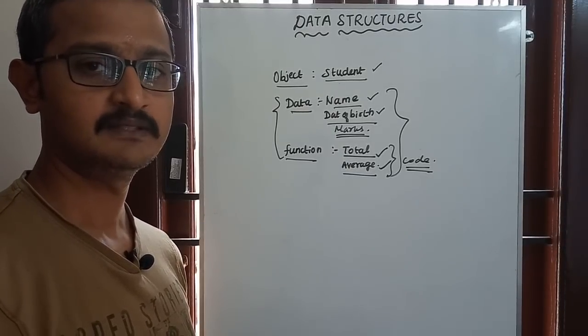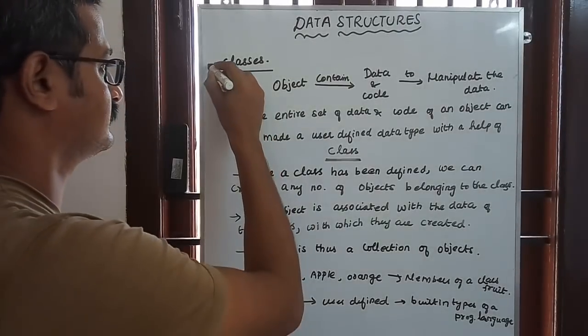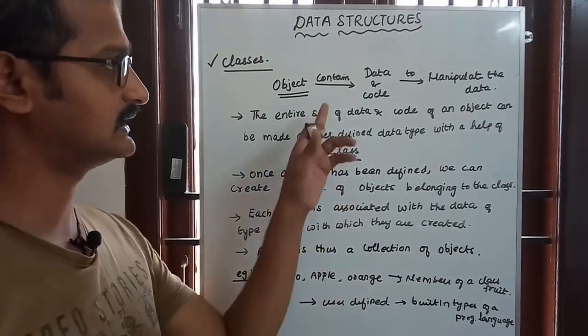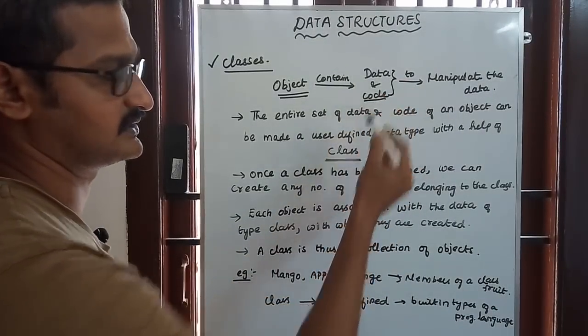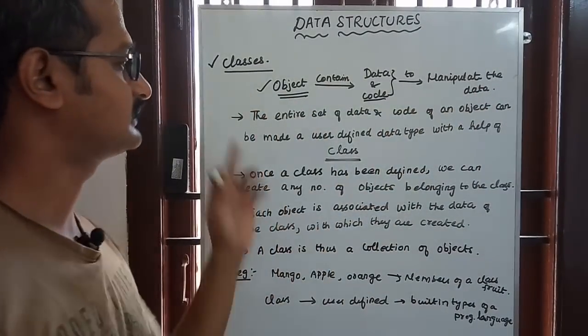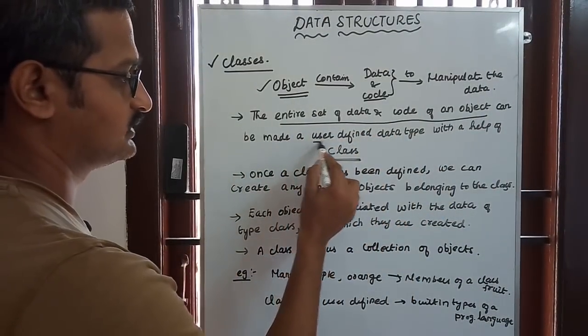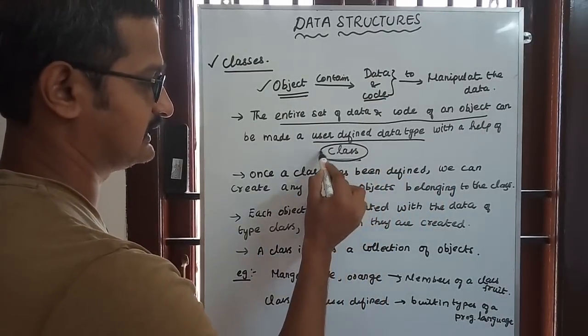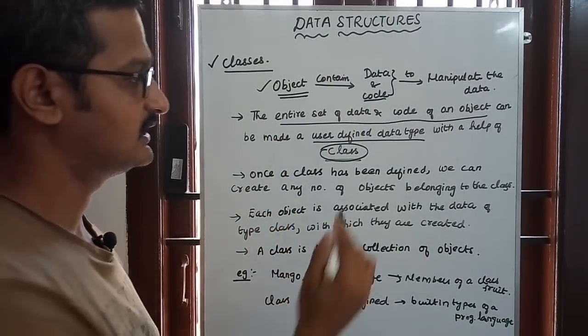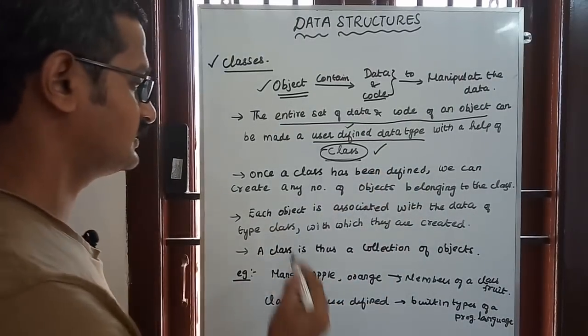Next, classes. Objects can contain both data and code - functions or set of instructions to manipulate the data. The entire set of data and code of an object can be made into a user-defined data type with the help of classes.